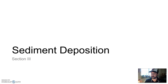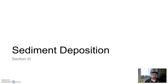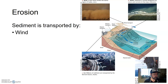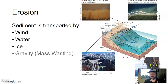We've broken down rocks into sediment. Now we're taking that sediment and we've got to pile it up somewhere — we've got to deposit it somewhere. So let's talk about sediment deposition. We need to take this material that's been broken down and transport it. That process is called erosion. Sediment can be transported by wind, by water, by ice, and by gravity.